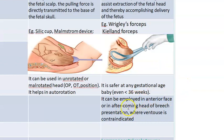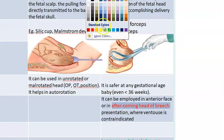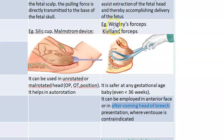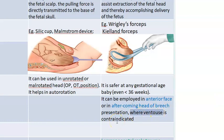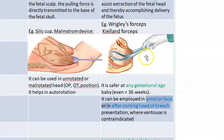When it comes to forceps, it can be employed even in face presentation and even in the after-coming head of breech. So in breech delivery you can use forceps for the after-coming head. You can use it in face presentation - specifically mentum anterior. In these cases ventouse is contraindicated - you can't put vacuum on the face. Also, forceps can be used for any gestational age, whereas ventouse cannot be used at all gestational ages.